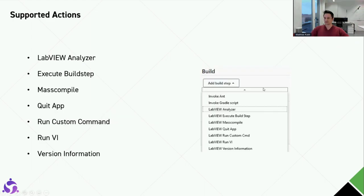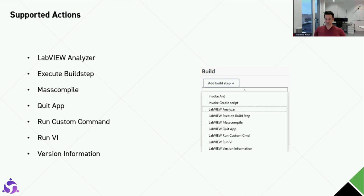So what are the supported actions in this Jenkins LabVIEW plugin? We can launch the LabVIEW Analyzer, execute the build step, do a mass compile, quit the application if that is needed on the build agent, run a custom command in the NI CLI format, or just run a specific VI that we have implemented. So yes, you can run any VI — including a functional test VI. The last action is version information, to set a specific version or revision on the executable, packages, or whatever you build.